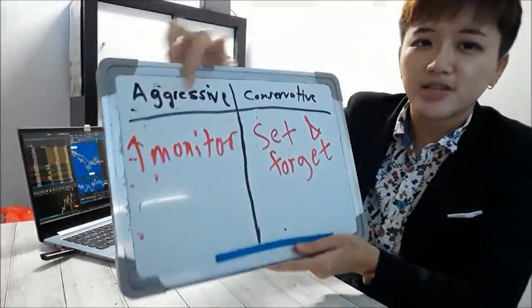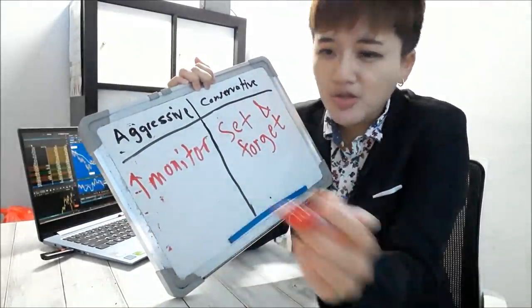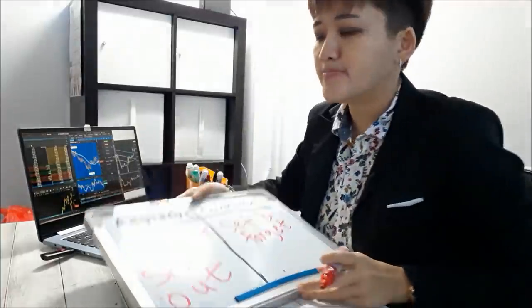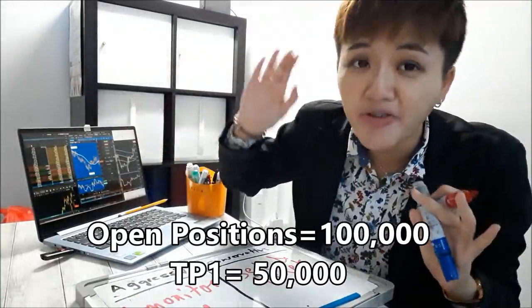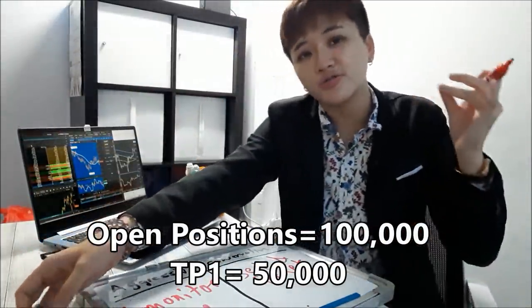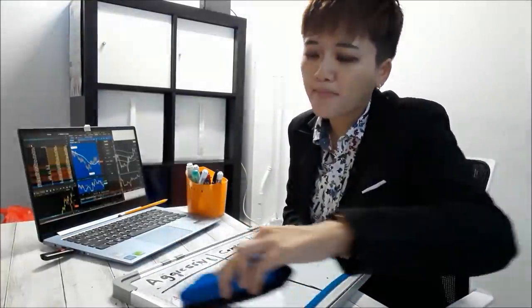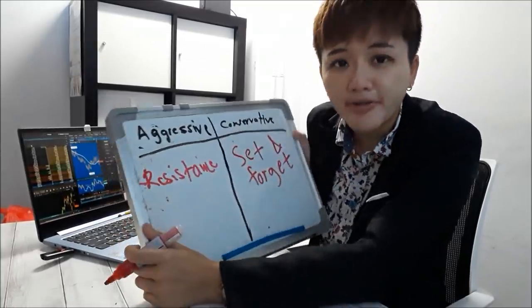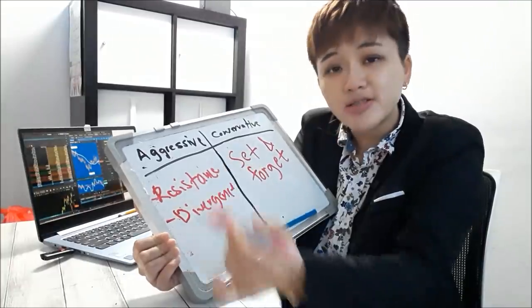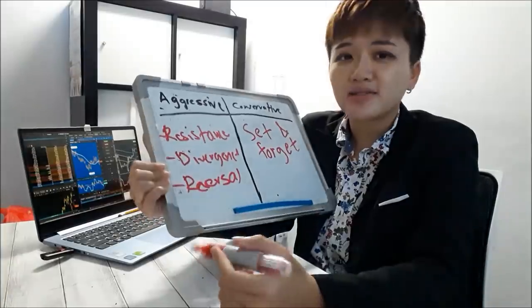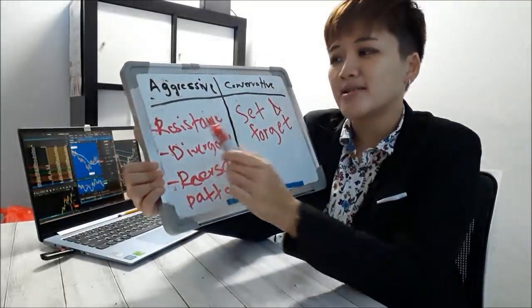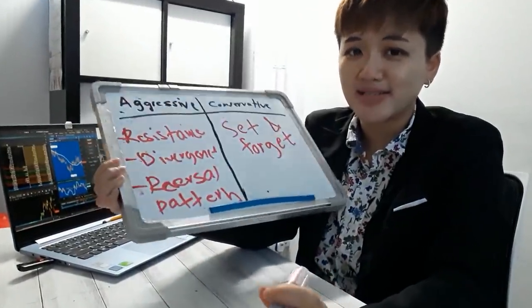How you exit depends on whether you're an aggressive or conservative trader. If you're an aggressive trader, you monitor the chart and scale out instead of exiting entirely when price hits your TP target. For example, if you're trading one standard lot and the price hits the first resistance, you scale out maybe half the position — 50,000 units — then scale out more at the next resistance. You can also scale out when there's divergence forming or a reversal pattern, like a double top or a bearish reversal candlestick at a resistance area.